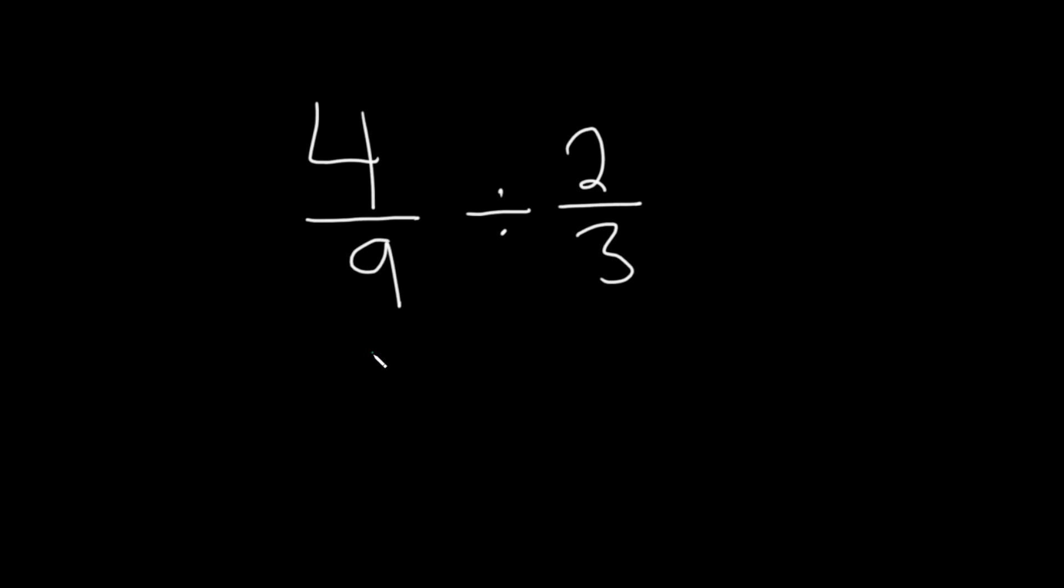So the very first thing you do is you keep the first number, so you just write it down again, and then you replace this division symbol with times. You can use an x also if you want. And then you find the reciprocal of this number. Basically you just flip it. So 3 over 2.